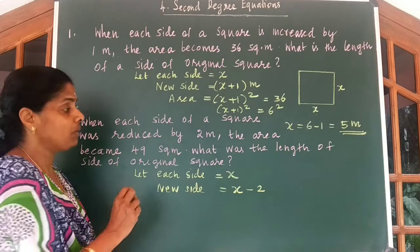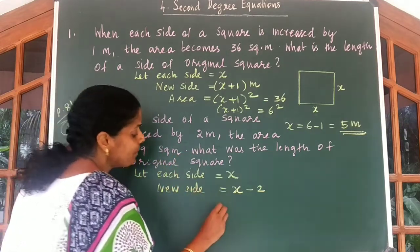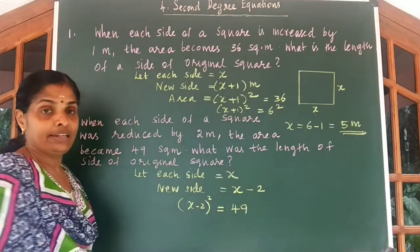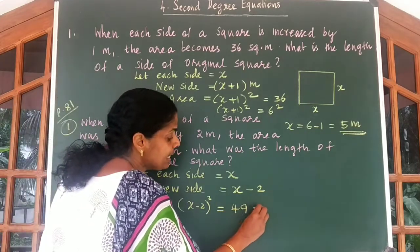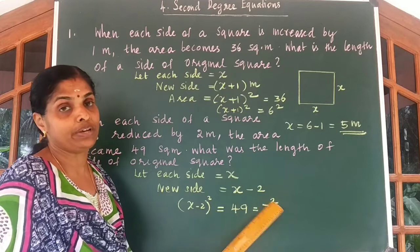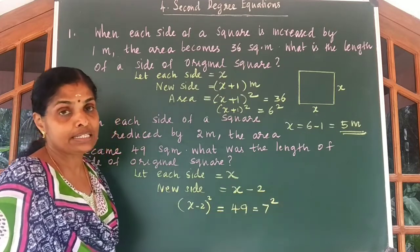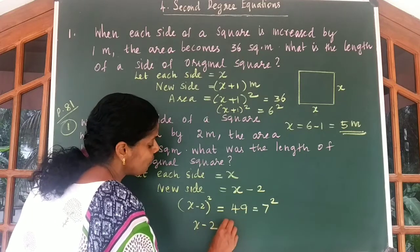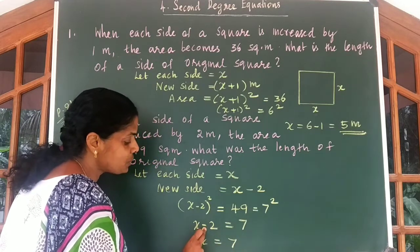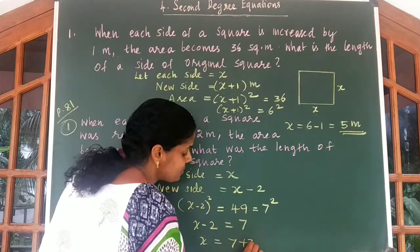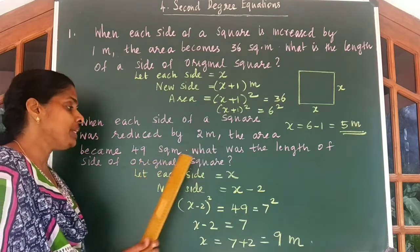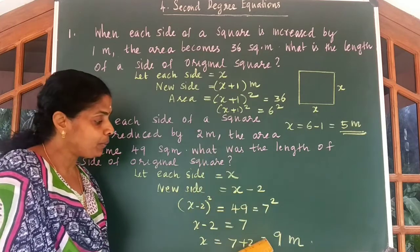Similar to our previous problem, we are given the area. So we can equate (X minus 2) squared equal to 49. We know 49 is the square of 7, so we can write (X minus 2) squared equal to 7 squared. Taking the square root on both sides, you get X minus 2 equal to 7. Therefore X is equal to 7 plus 2, which is equal to 9 meters. So the original square has its side equal to 9 meters.